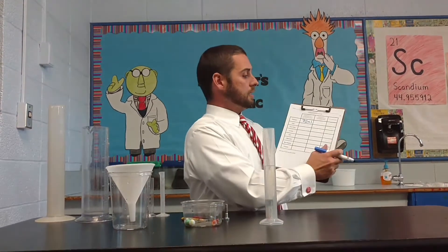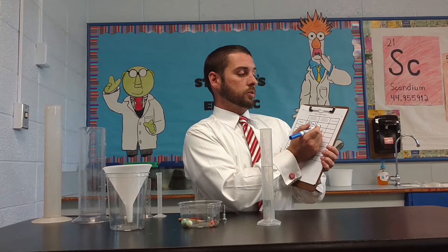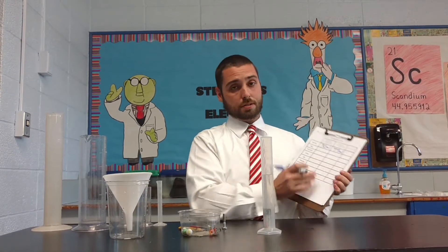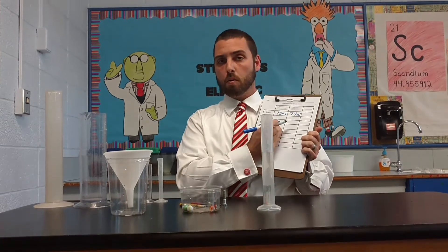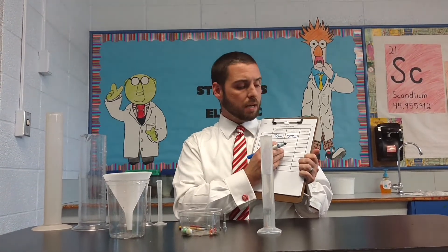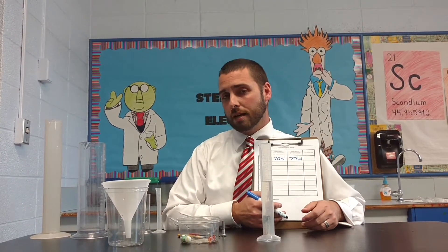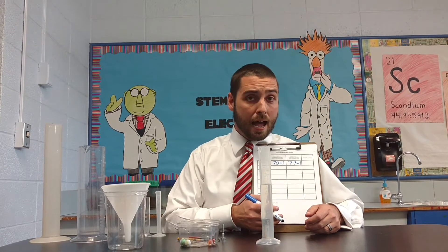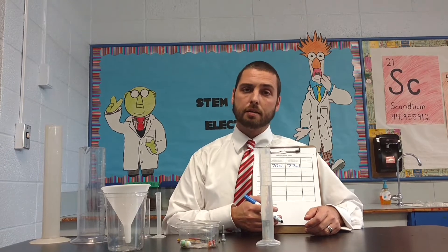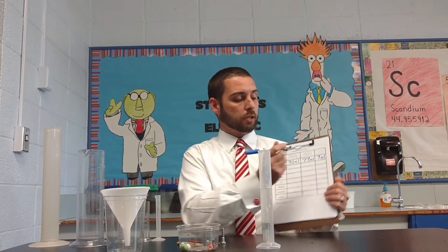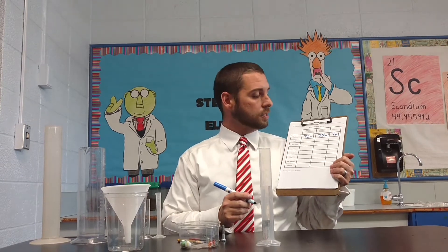So now I come back to my data table. The third column says water level in the graduated cylinder post-displacement — that's 77 milliliters. So we got 70 milliliters and 77 milliliters. That's important information we're going to use to find the volume. How do we use that information? We need to find the difference. Difference means subtract. So 77 minus 70 equals 7 milliliters. That is our volume.